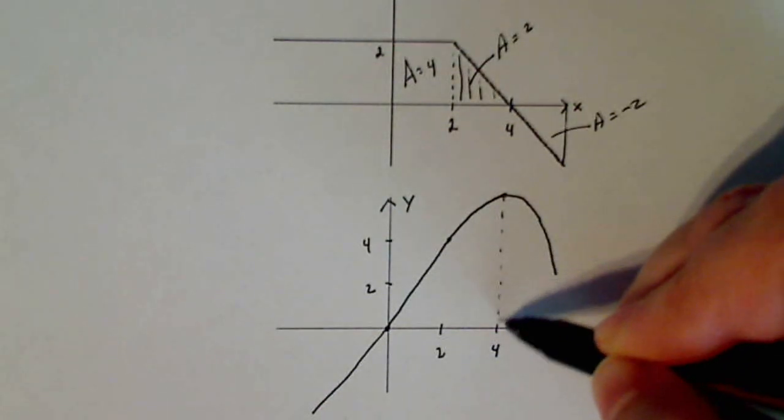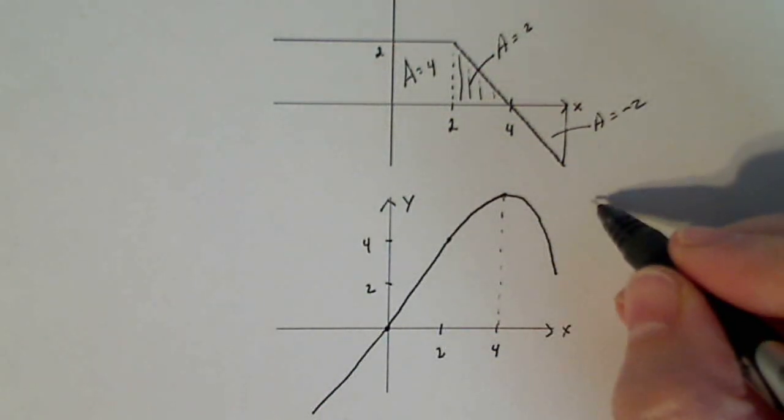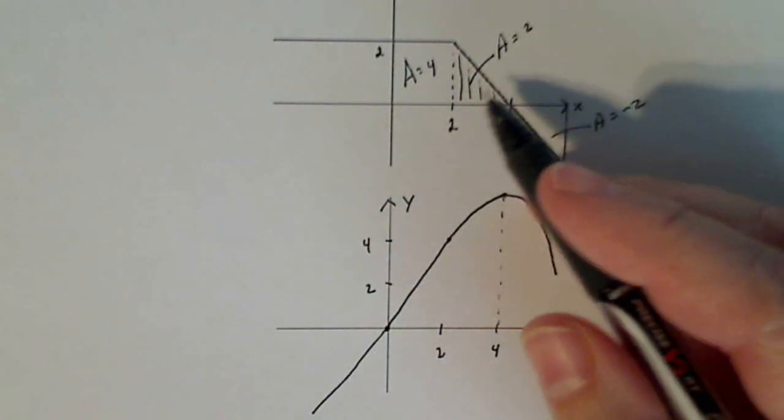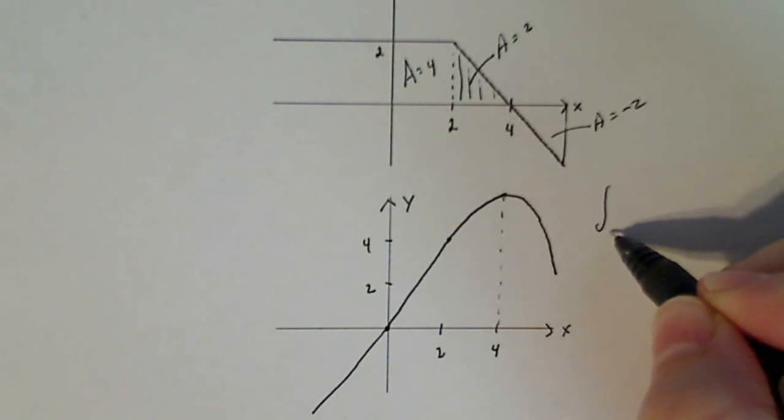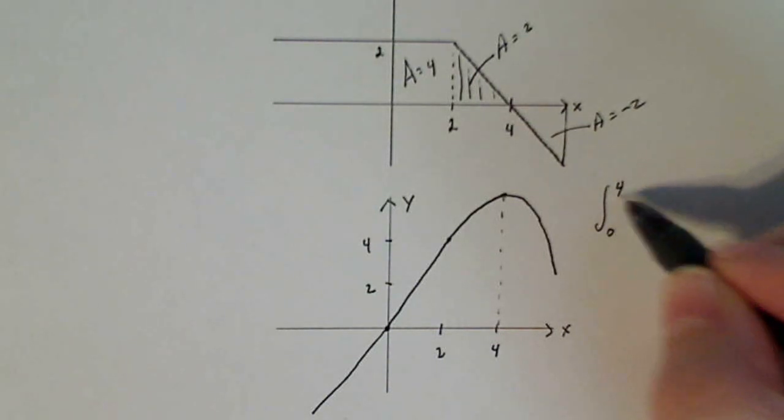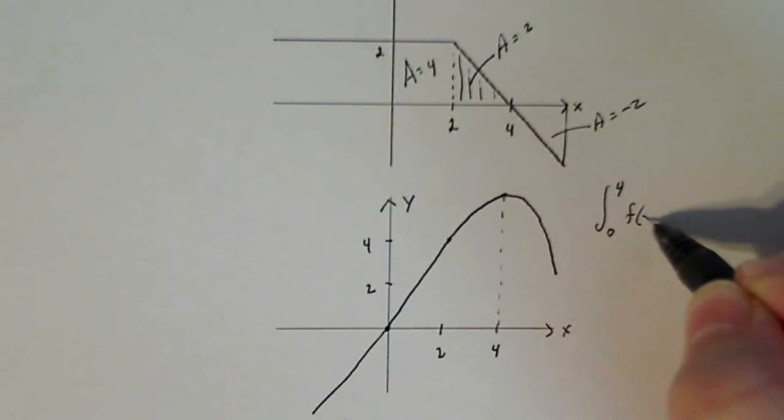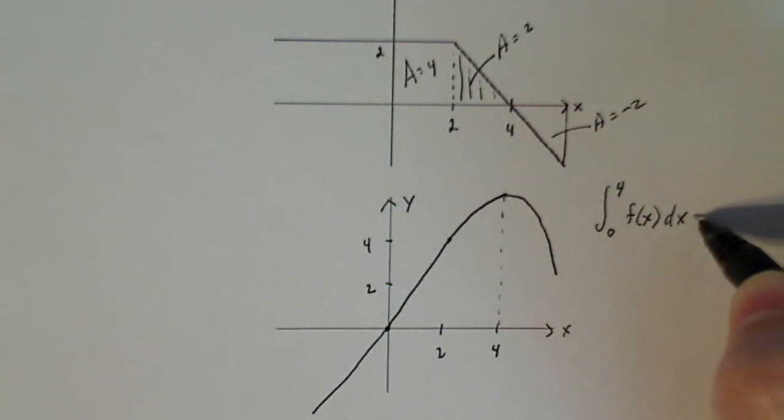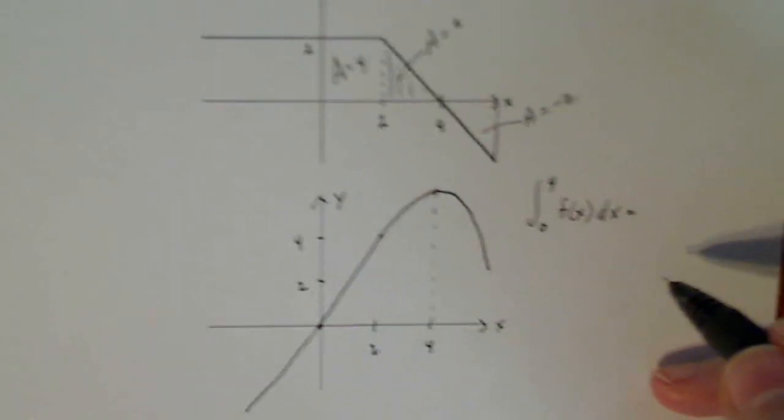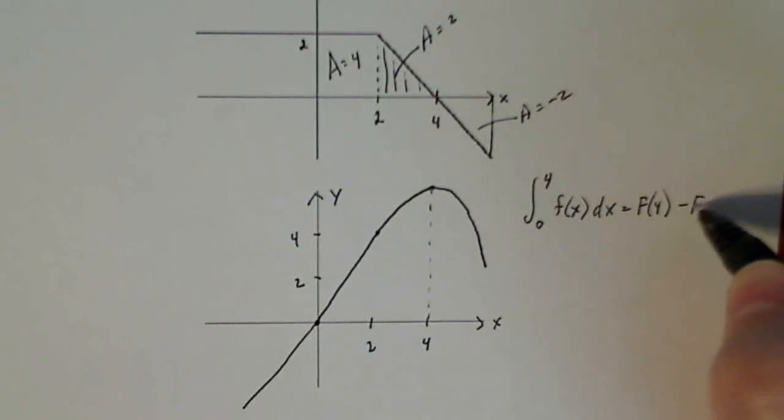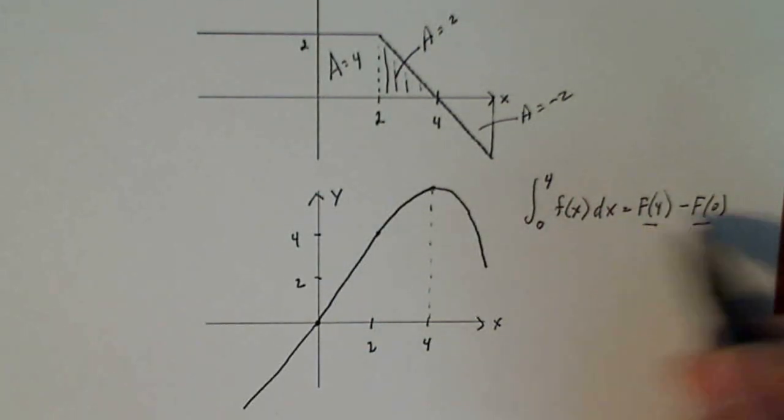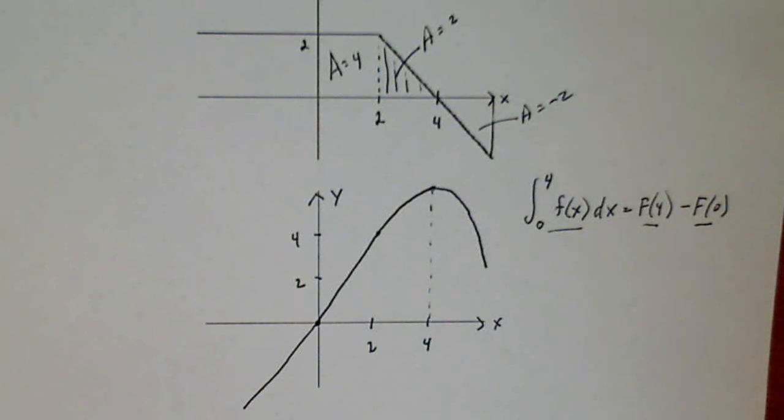So if I want to know exactly where these values are, let's say I want to know capital F of four. So capital F of four is going to be evaluated by integrating from zero to four little f of x dx, which we know by the fundamental theorem. That's capital F of four minus capital F of zero. Of these three things right here, I do know one of them. That's F of zero.